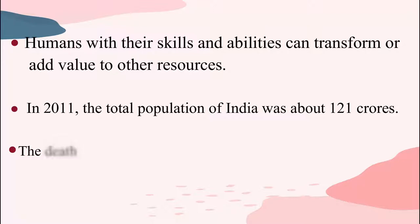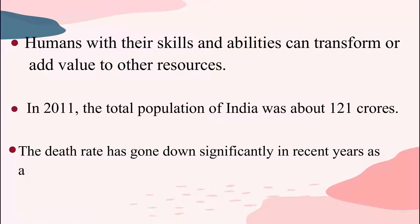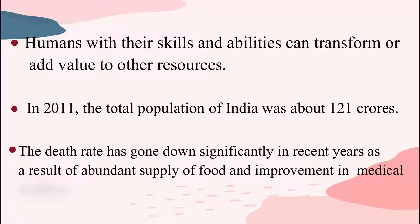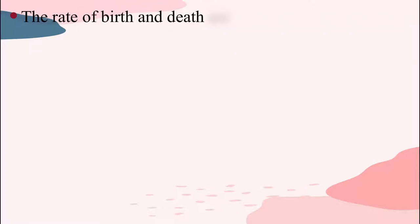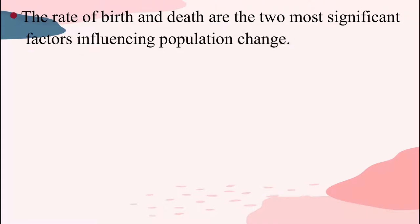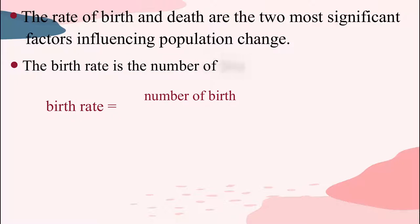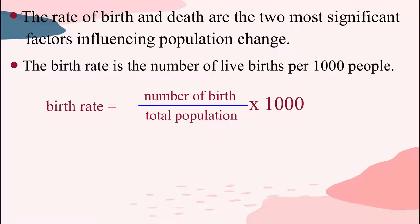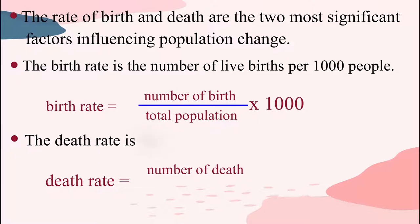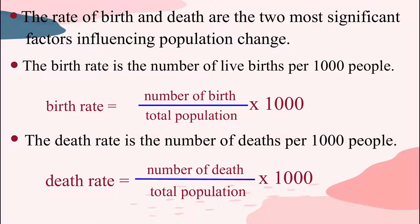The death rate has gone down significantly in recent years as a result of abundant supply of food and improvement in medical facilities throughout the world. The rate of birth and death are the two most significant factors influencing population change. The birth rate is the number of live births per thousand people. The death rate is the number of deaths per thousand people.